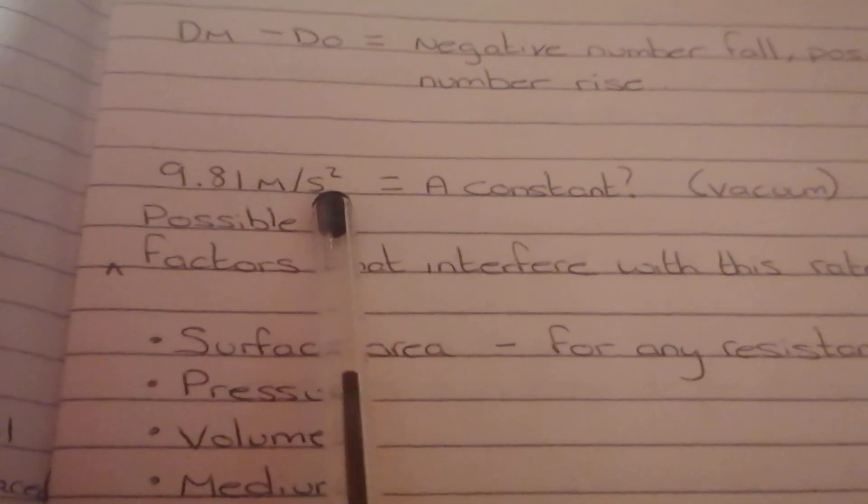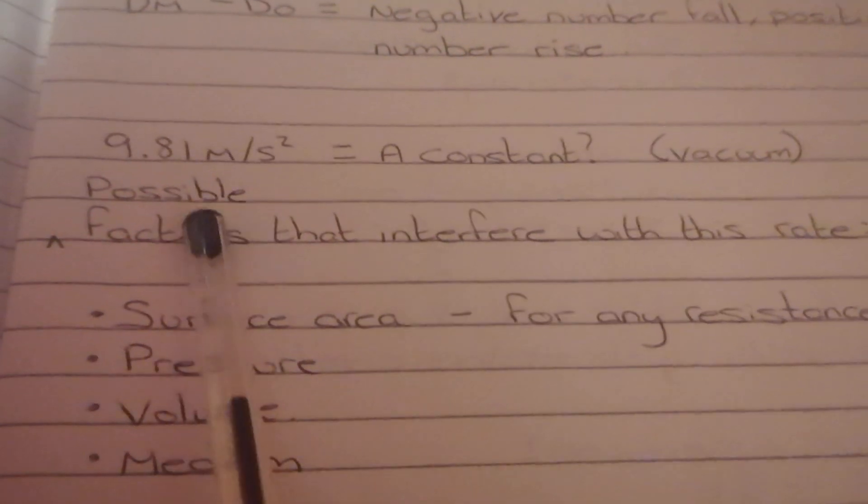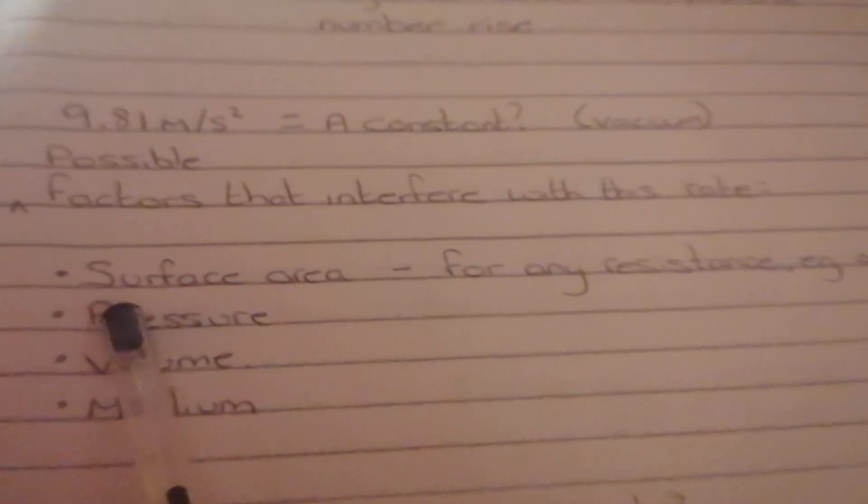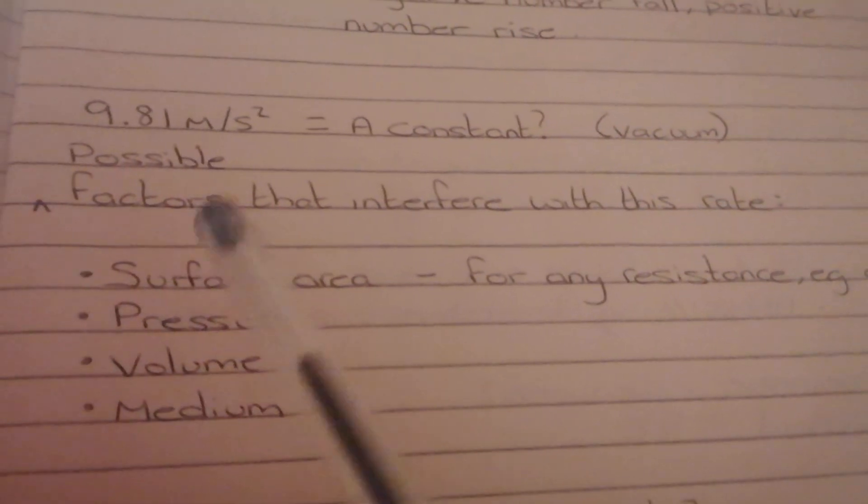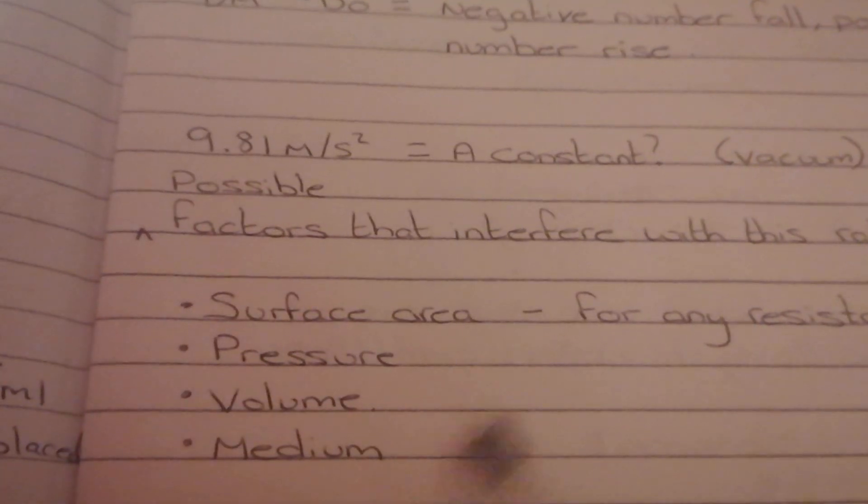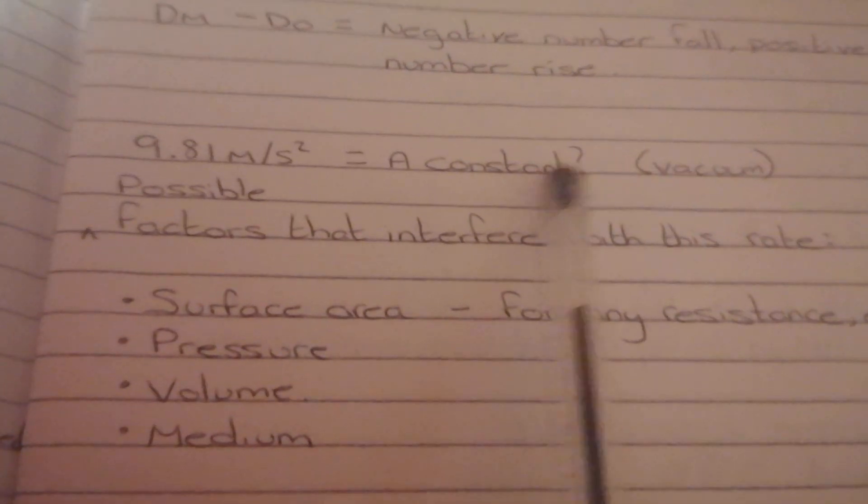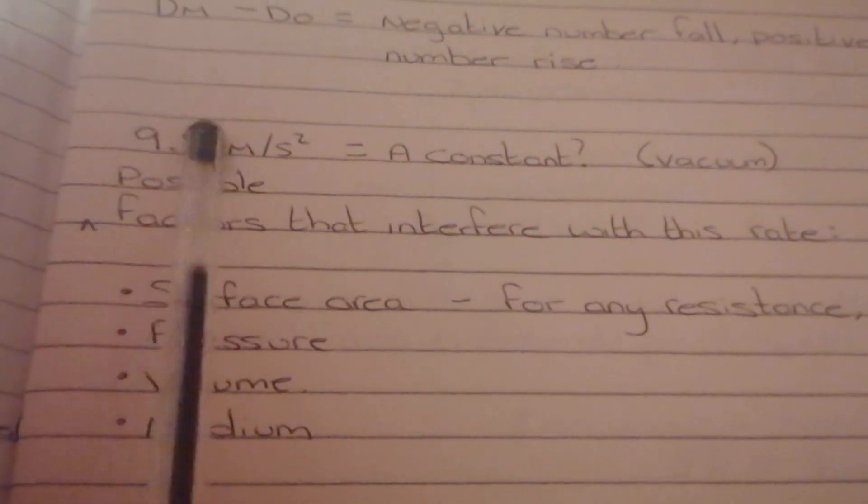9.81 meters per second squared. I believe that could be a constant in a vacuum. Possible factors that interfere with this rate, surface area obviously for any resistance. Example air resistance, pressure, volume, medium. I believe these could all be factors that interfere with the rate of fall. I believe the 9.81 meters per second squared is a constant, like the over 26 constants that there is. I believe that doesn't change.